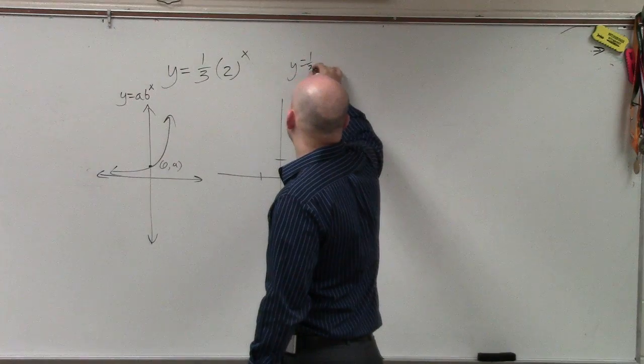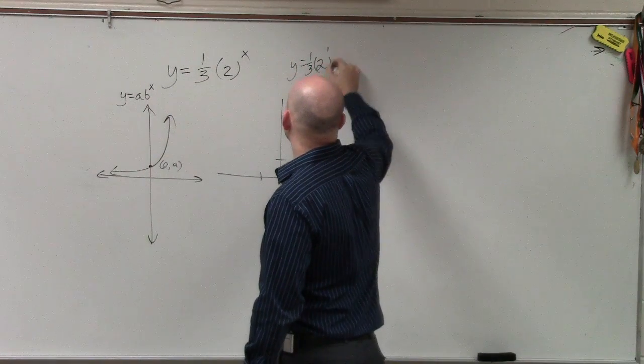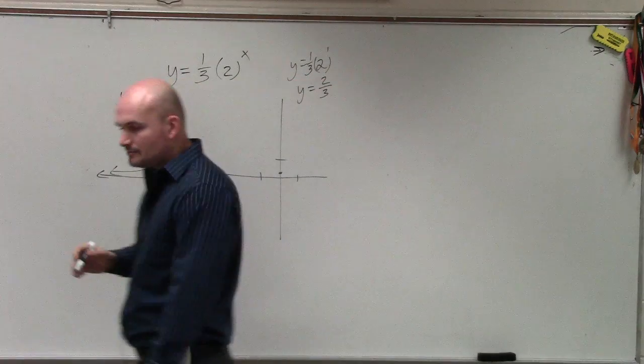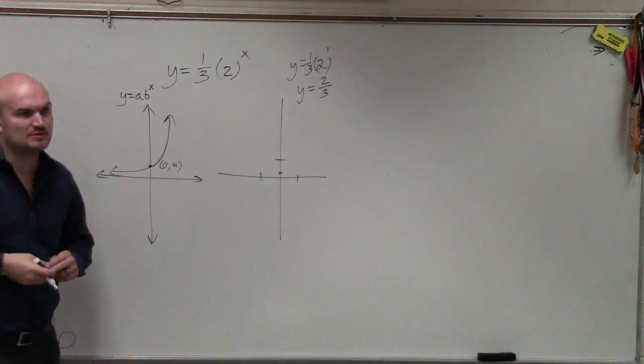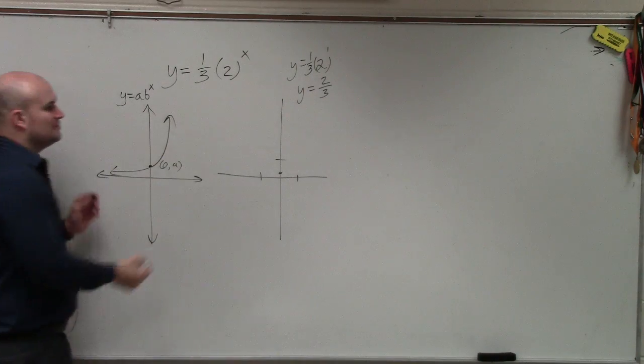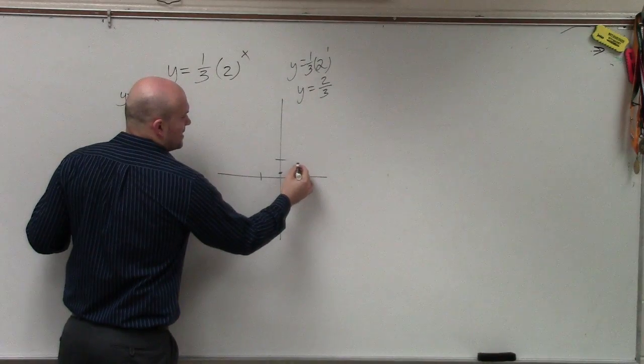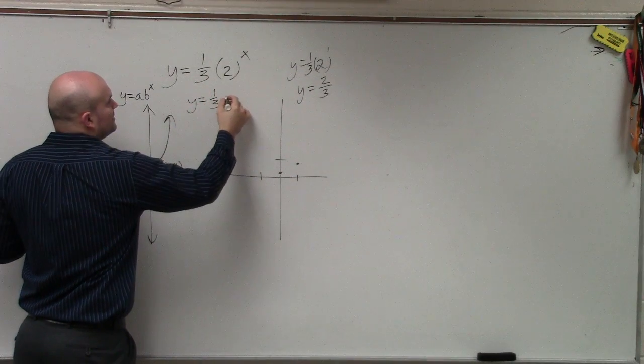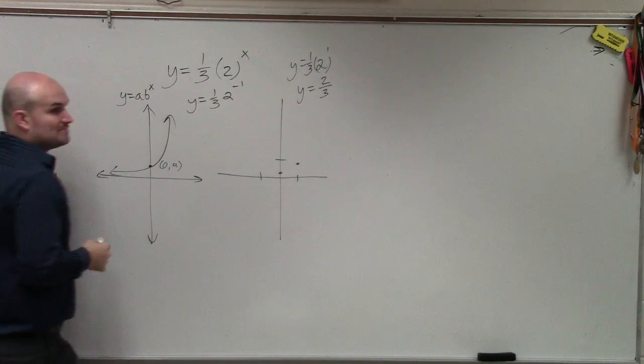So y equals one-third times 2 to the first power. Well, that equals y equals two-thirds. Would everybody agree to me? 2 times one-third is two-thirds? So two-thirds is like 0.66, right?